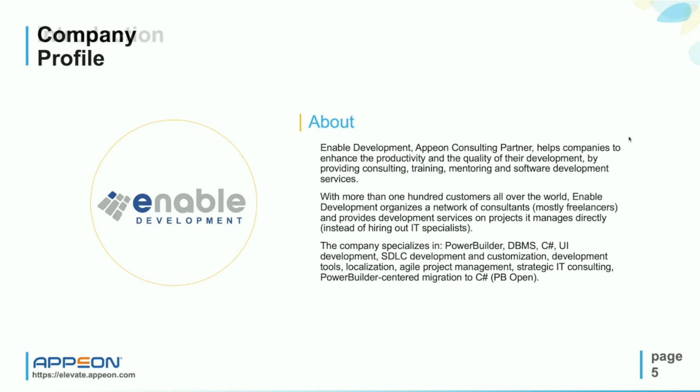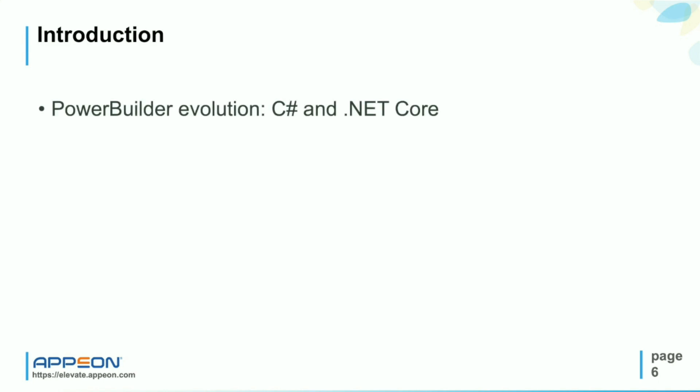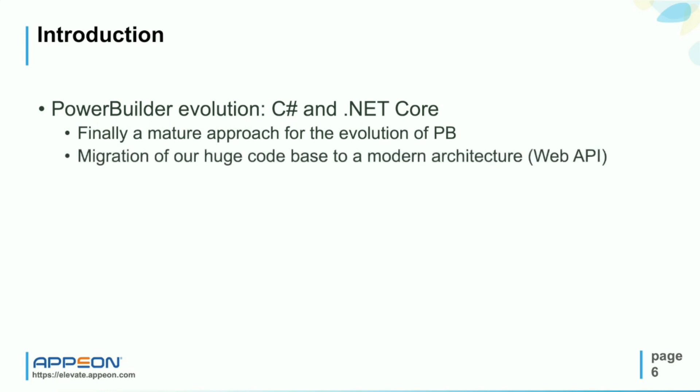Now let's go to the core part of the presentation. As you are at the Elevate conference, you already know everything about the evolution of PowerBuilder. This journey started several years ago and shows that C-Sharp is our destination. Appeon has given PowerBuilder a well-deserved future by wisely choosing C-Sharp and .NET Core. These two key elements allow us to migrate our huge code base to a modern, rich, stable and scalable architecture.